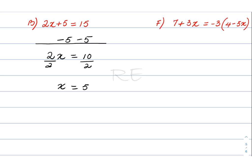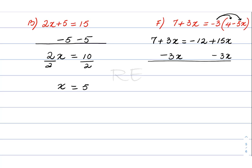For question F, we leave the left side alone and use distribution on the right side. Negative 3 times 4 gives negative 12, and negative 3 times negative 5x gives positive 15x. We then transpose 3x by subtracting 3x from both sides, giving 7 is equal to negative 12 plus 12x.